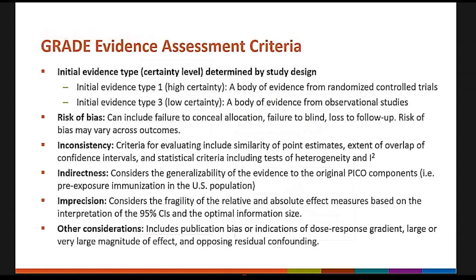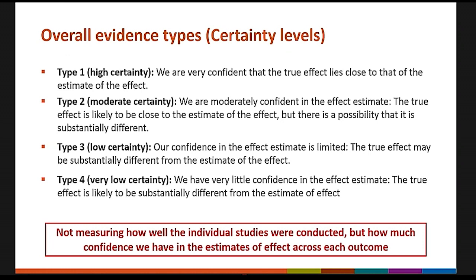The GRADE evidence assessment criteria include risk of bias, inconsistency, indirectness, imprecision, and other considerations. The overall evidence certainty ranges from type 1 to type 4: Type 1 is high certainty — very confident the true effect lies close to the estimate. Type 2 is moderate certainty — moderately confident, though the true effect may differ somewhat. Type 3 means confidence in the effect estimate is limited — the true effect may be substantially different. Type 4 is very low certainty — very little confidence, and the true effect is likely substantially different.